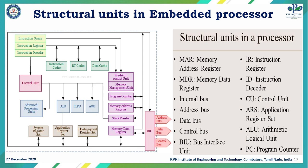For the floating point processing unit, there is a separate floating point register set. Another system register set is used for system operations. Some embedded processors might have advanced processing units like graphics processing, which may be present based on the application, adding advanced processing units to the architecture.